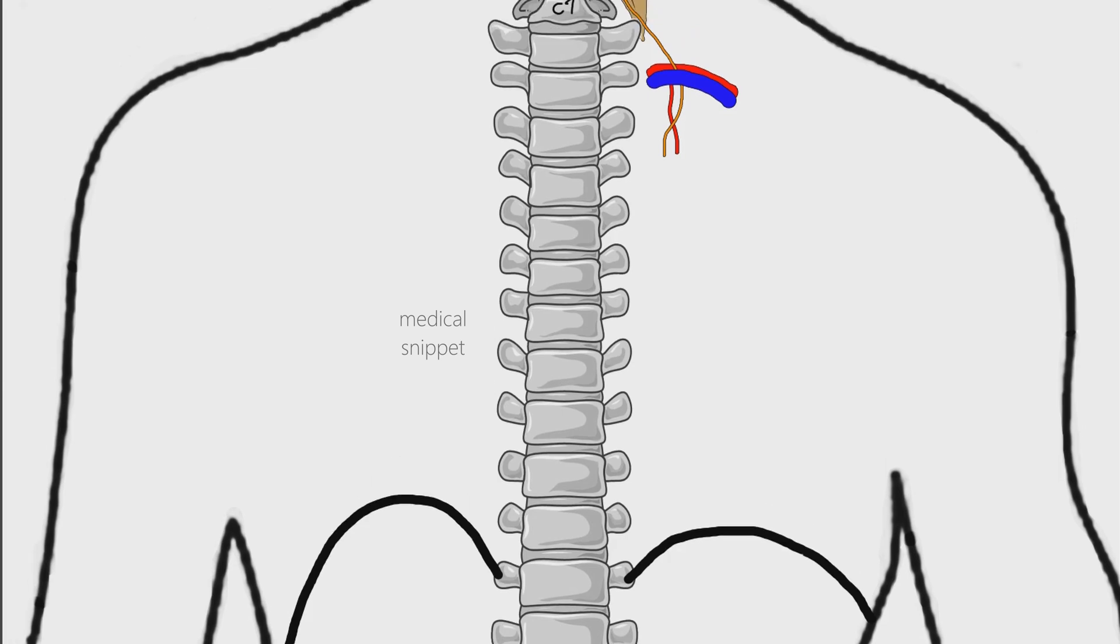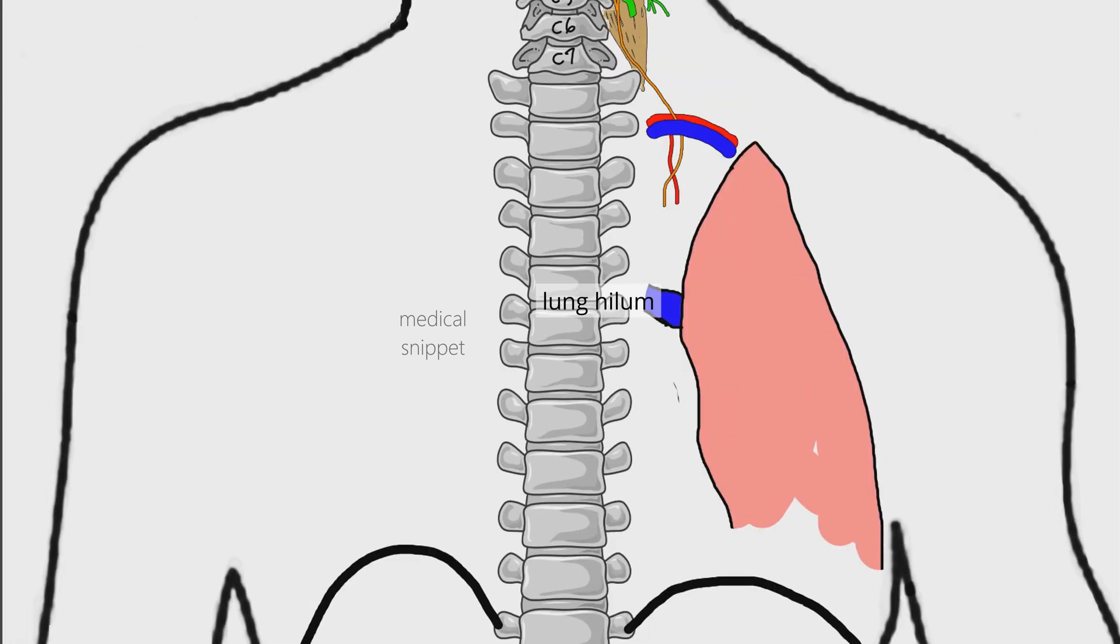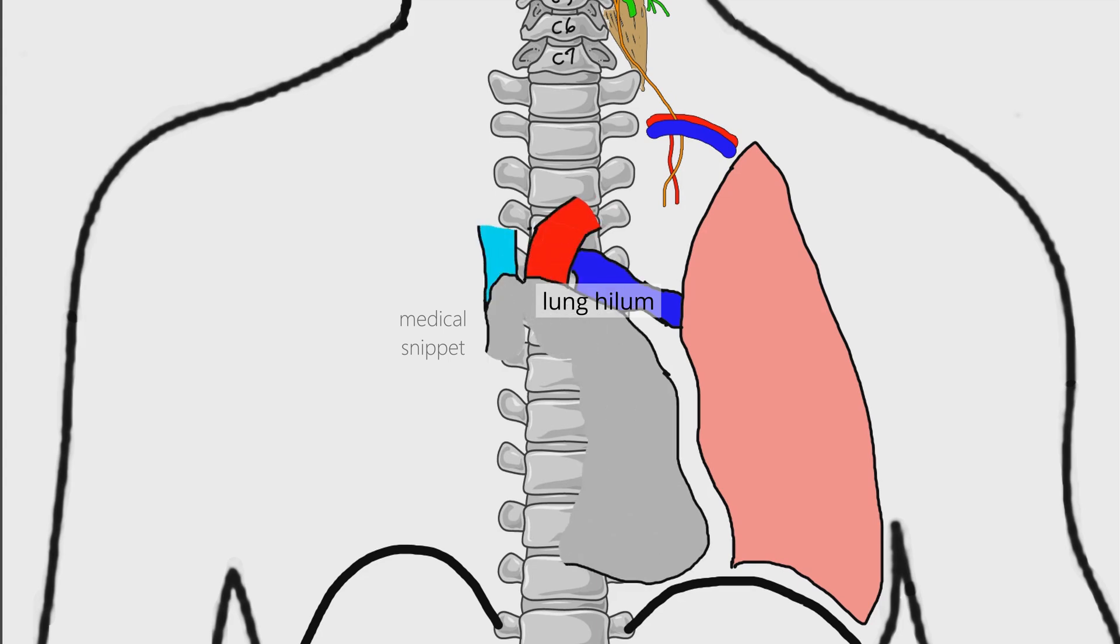Then it travels downwards, it passes in front of the lung hilum. It lies between the fibrous pericardium and mediastinal pleura. Then it pierces the diaphragm and supplies it.